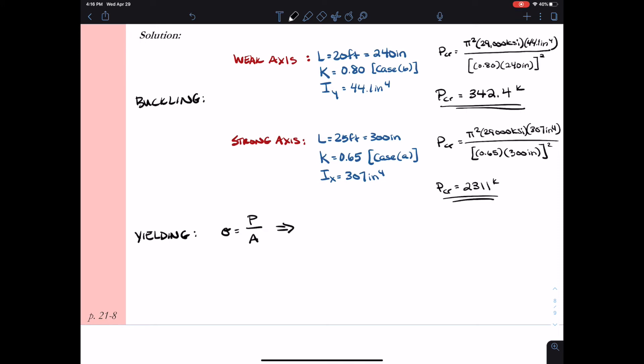Finally, I want to look at yielding. So yielding comes back to our normal stress equation, P over A. So I'm going to rewrite that to find the force for yielding as my yield stress times my area. So my yield stress was given to me as 50 KSI for this particular member. My area is given to me as 11.7 inches squared. Doing the math, that gives me the force to cause yielding as 585 kips.